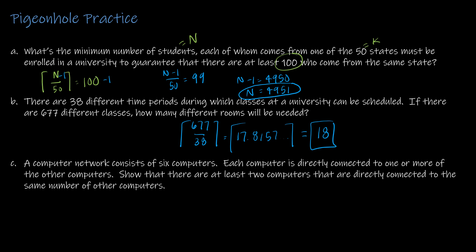And lastly, a computer network consists of 6 computers. Each computer is directly connected to one or more of the other computers. Show there are at least 2 computers directly connected to the same number of computers. So I have 6 computers. That's n. Each computer is directly connected to one or more. So 1 or 2 or 3 or 4 or 5 computers. So that would constitute 5 boxes. And so again, this is straight up 6 divided by 5 gives me a ceiling function of 2. So yes, I have just shown that there are at least 2 computers that are directly connected to the same number of other computers. Because if we have 1 computer connected to 1, 1 computer connected to 2, and so on and so forth, that leaves 1 that must be connected to the same number as a different computer.